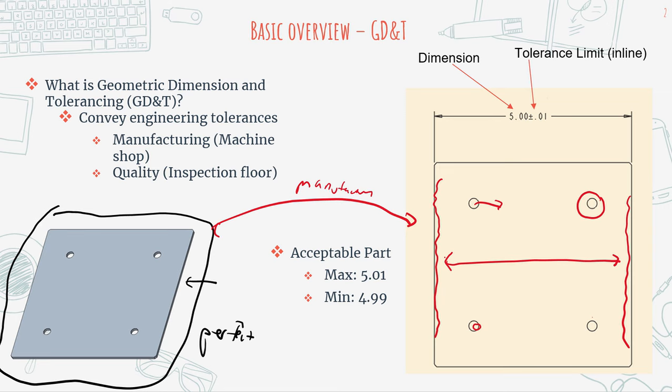Especially if we look at this on a microscopic level, we notice that there is a lot of imperfection along the edge — you can see that it's not perfectly smooth. And that's where we get into the idea of utilizing something like tolerances.